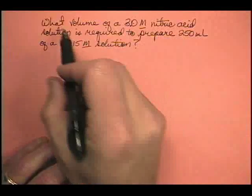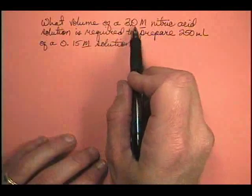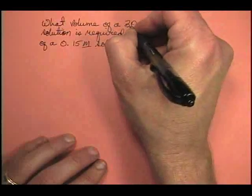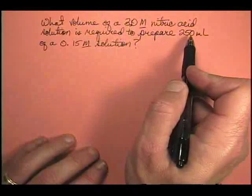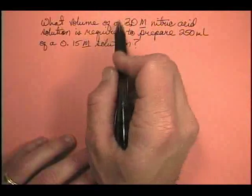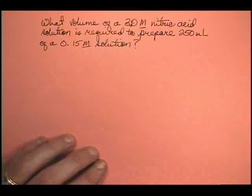Well notice we're taking some concentrated solution that's 3.0 and we're going to dilute it. We want to find out how much of this we're going to need in order to make 250 milliliters of a 0.15 molar solution.